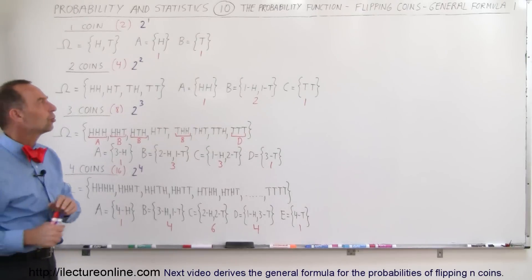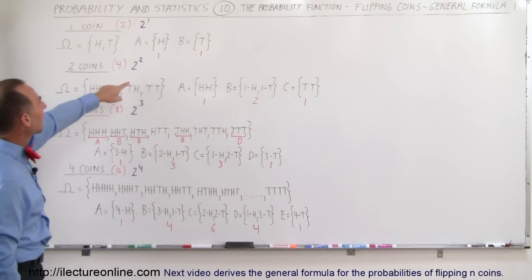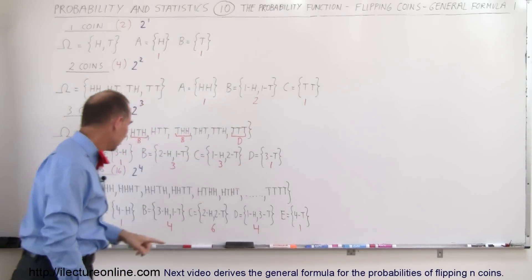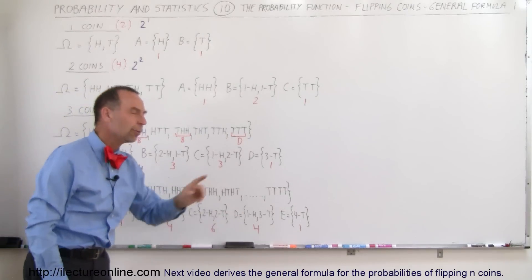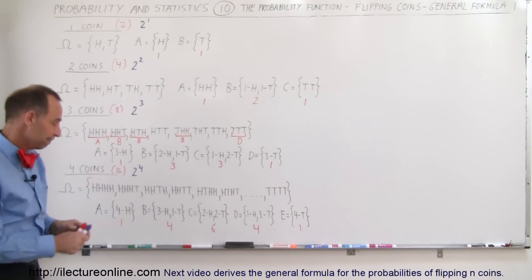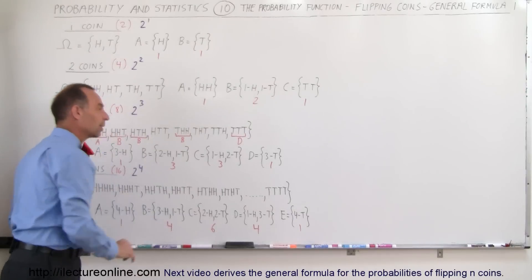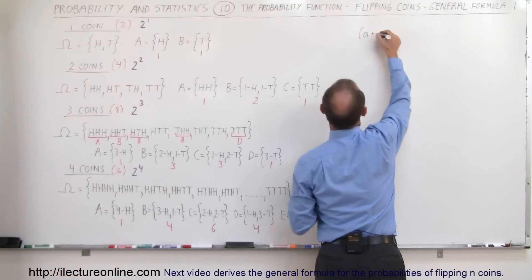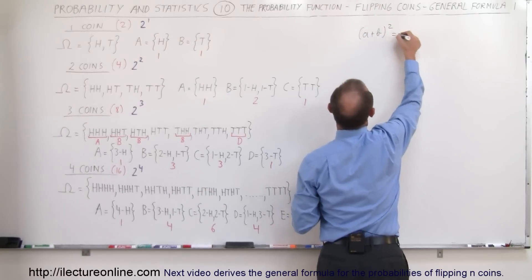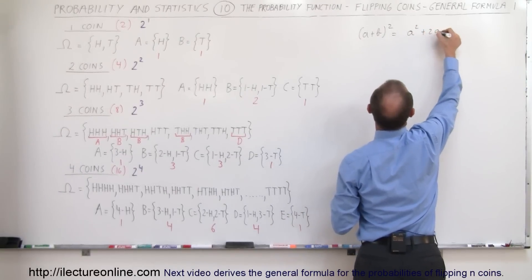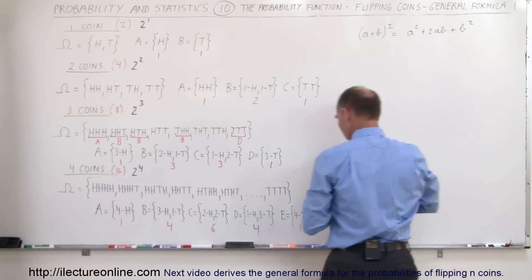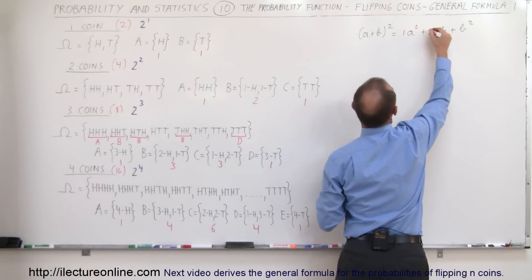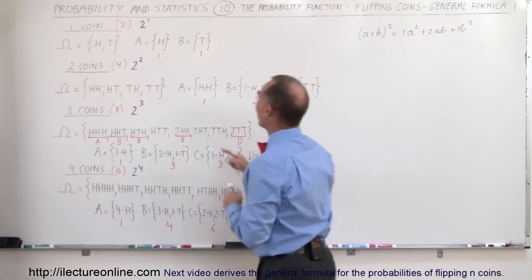There's another thing we should notice. For one coin we have 1 and 1. For two coins it's 1, 2, and 1. For three coins it's 1, 3, 3, and 1. For four coins it's 1, 4, 6, 4, and 1. That should remind you of an interesting pattern. When you think back to your algebra class and you had binomials — for example, a plus b squared — that gave you a squared plus 2ab plus b squared. Notice the coefficients: 1, 2, and 1.